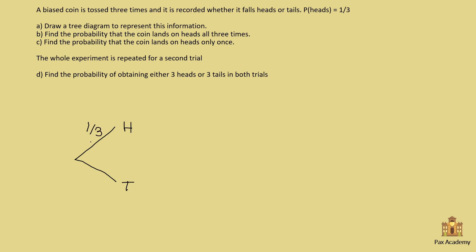So we write one-third there for heads. The probability of tails is going to be whatever is left over. So if the probability of getting heads is one-third, the probability of getting tails is going to be two-thirds.